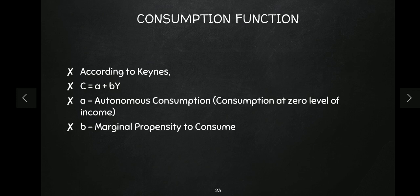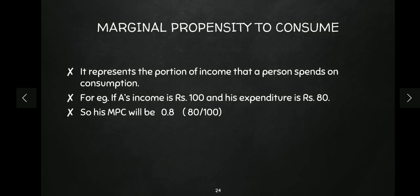And 'b' is the marginal propensity to consume (MPC) — basically, what portion of income you are spending. Not every person spends all their income; they also save some. As in the example, if income is 100 rupees and expenditure is 80 rupees, that means the person spends 80 percent of their income. This is called marginal propensity to consume — in this case MPC = 0.8.